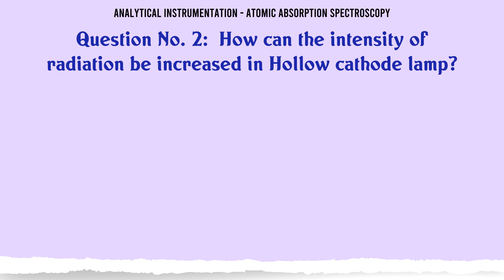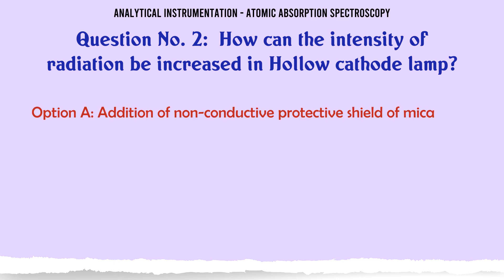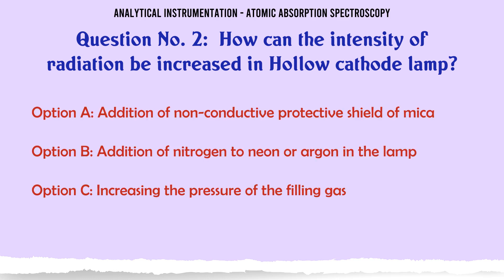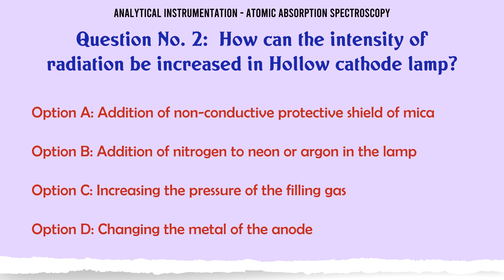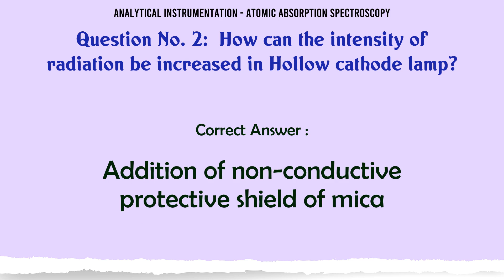How can the intensity of radiation be increased in a hollow cathode lamp? A. Addition of non-conductive protective shield of mica. B. Addition of nitrogen to neon or argon in the lamp. C. Increasing the pressure of the filling gas. D. Changing the metal of the anode. The correct answer is: addition of non-conductive protective shield of mica.